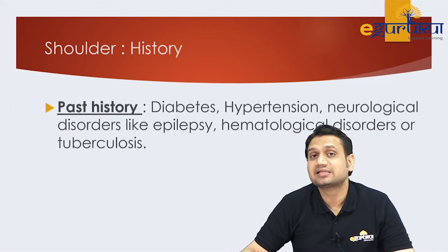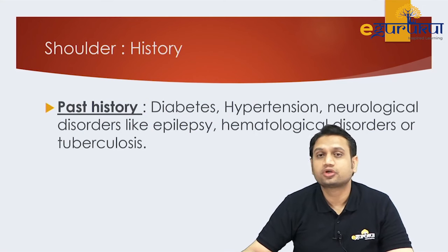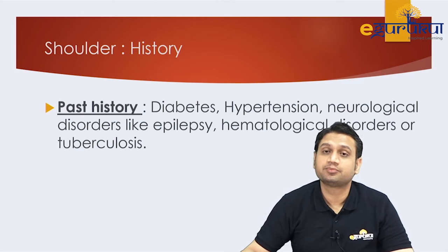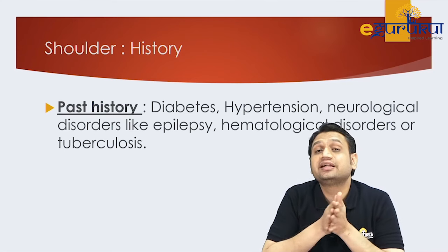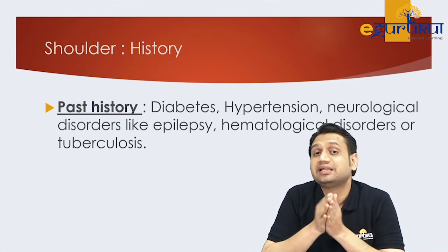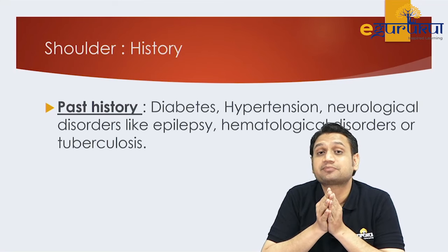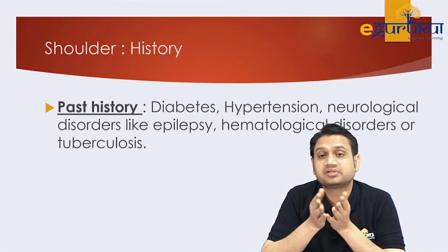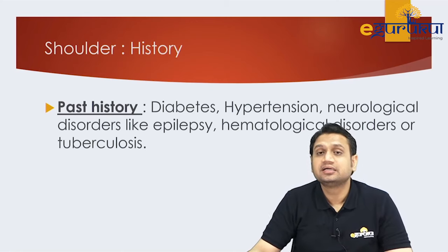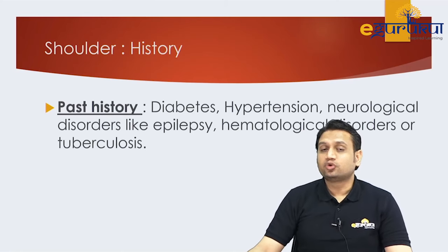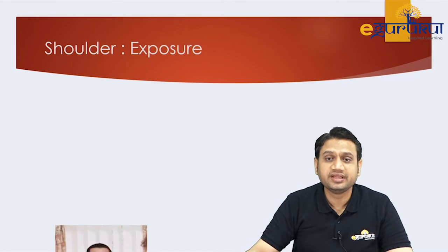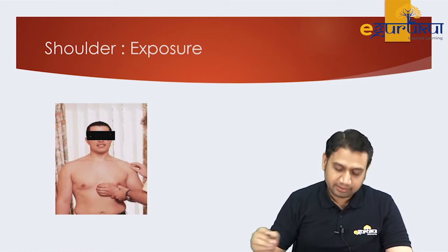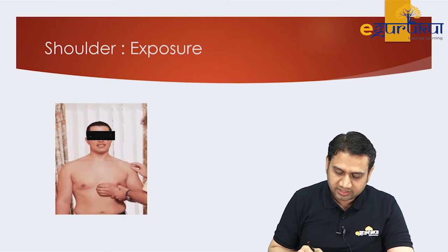In the history, also ask about past history of diabetes, hypertension, neurological disorders, and any medications. This is important because posterior dislocation is more common in epilepsy patients who may be on anti-epileptics, and adhesive capsulitis is more common in diabetic patients. Every point in the history gives you a direction for the diagnosis.